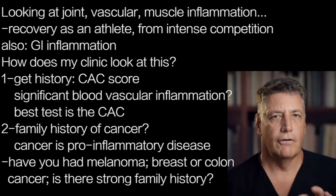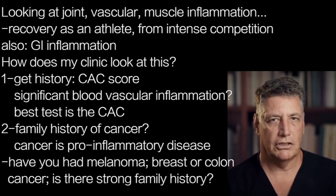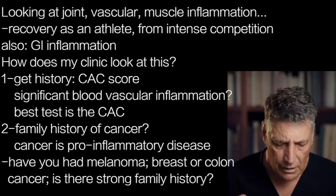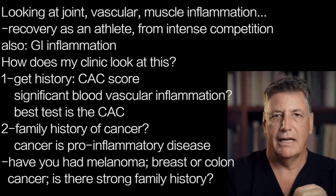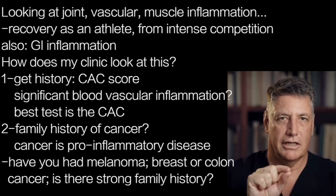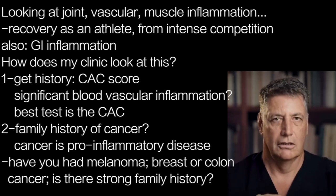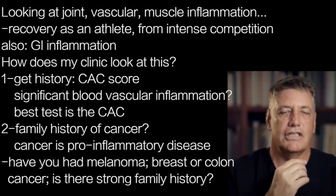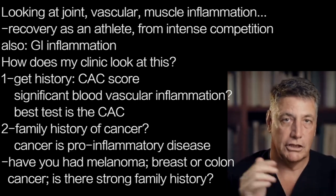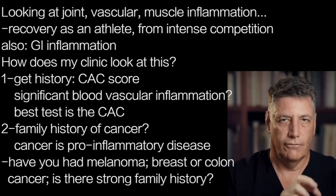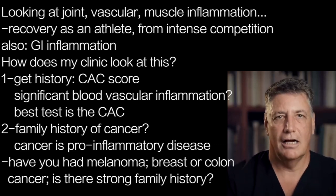This video is going to focus very heavily on how I, as a metabolic health specialist, as a clinician, as an MD, PhD, evaluate this when you walk into my office for a consultation. The first thing we do is get a history. Have you had a CAC score — a coronary artery calcium score? A coronary artery calcium score is critical to tell us how your body is responding to chronic inflammation in your blood vessels, and whether there is significant vascular inflammation that has been ongoing. The single best screening tool for that is a CAC score.